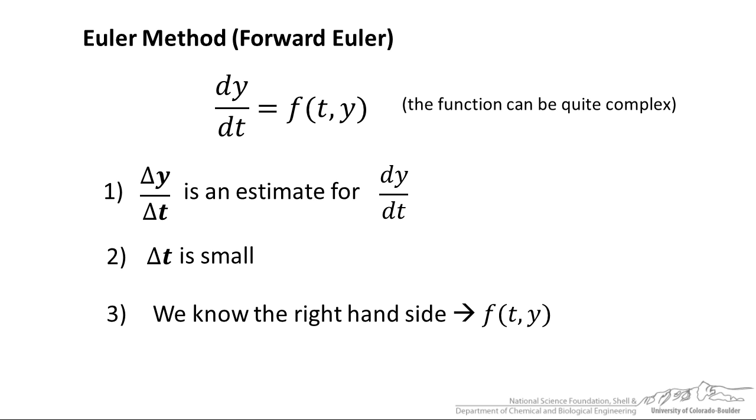We have to know that function on the right-hand side, and finally we have to know an initial condition. Usually time zero is chosen, but it does not necessarily have to be, and then we have to know the function value.